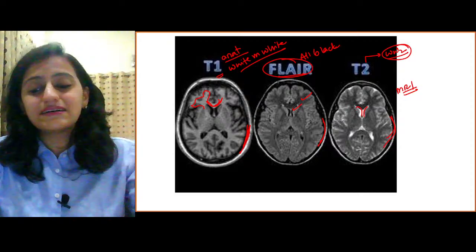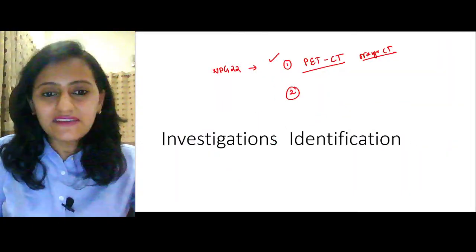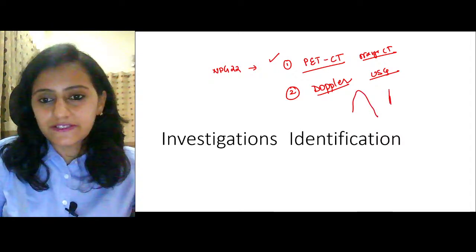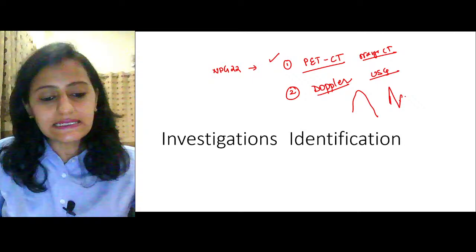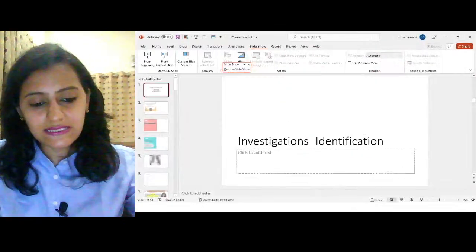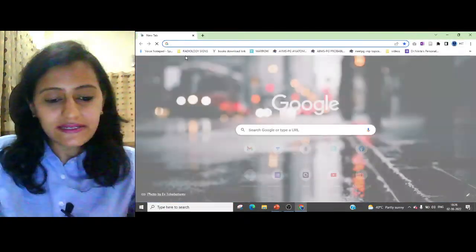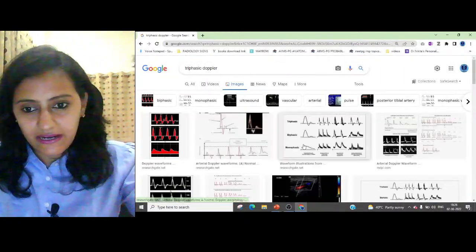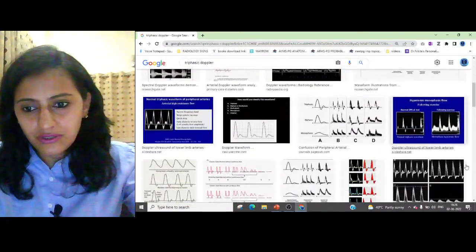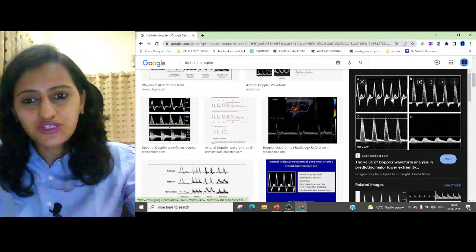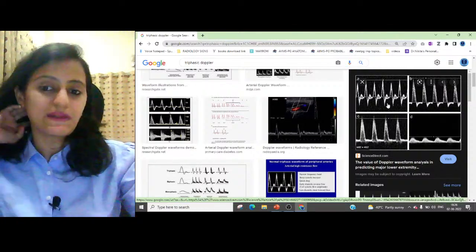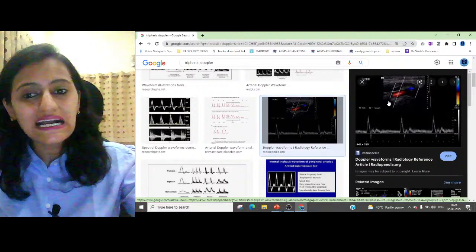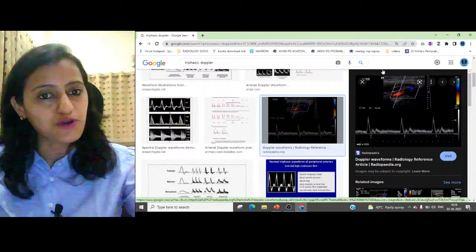In NEET PG-22 the second investigation asked was Doppler ultrasound. You were given a graph-type image — the triphasic graph of an artery. In Doppler you get the color image and also a spectral Doppler graph. Doppler was very important to identify.